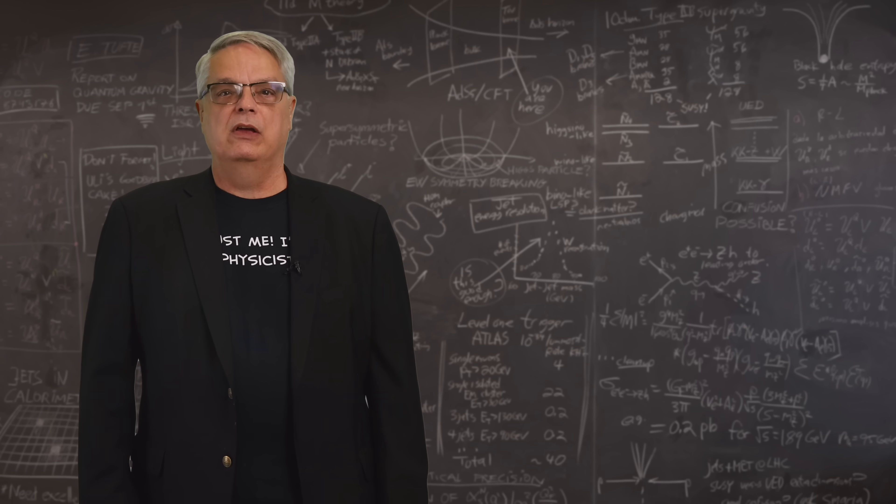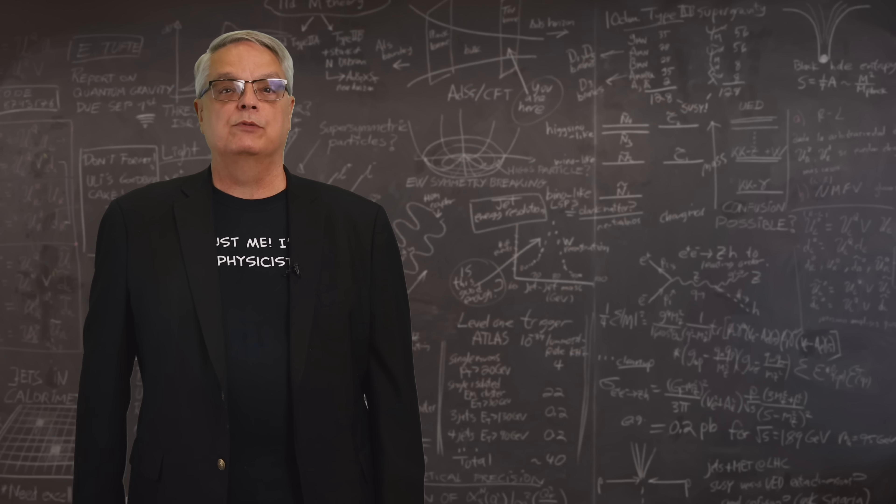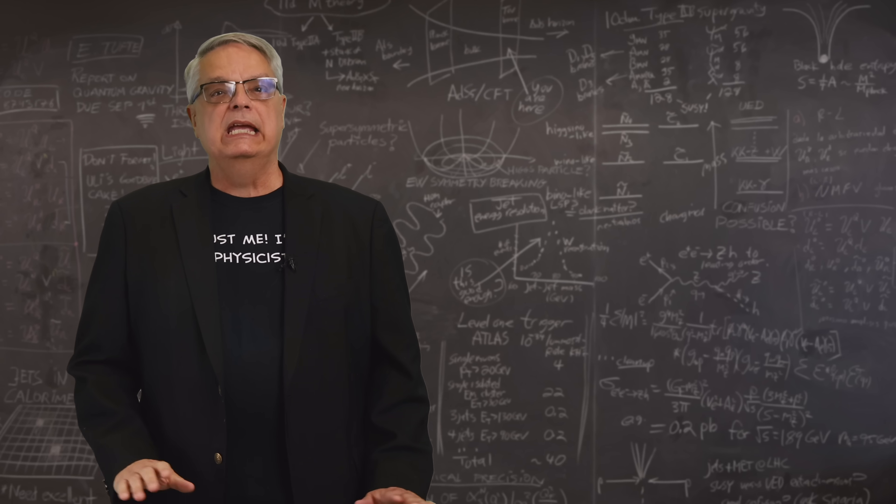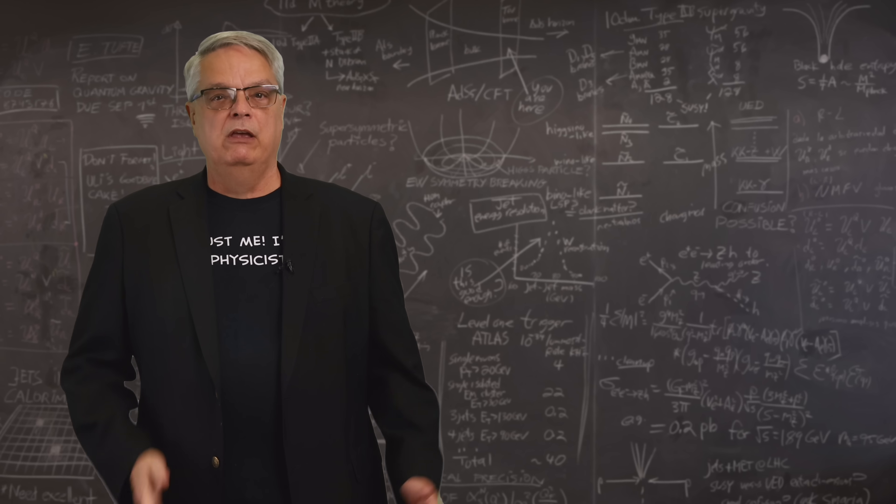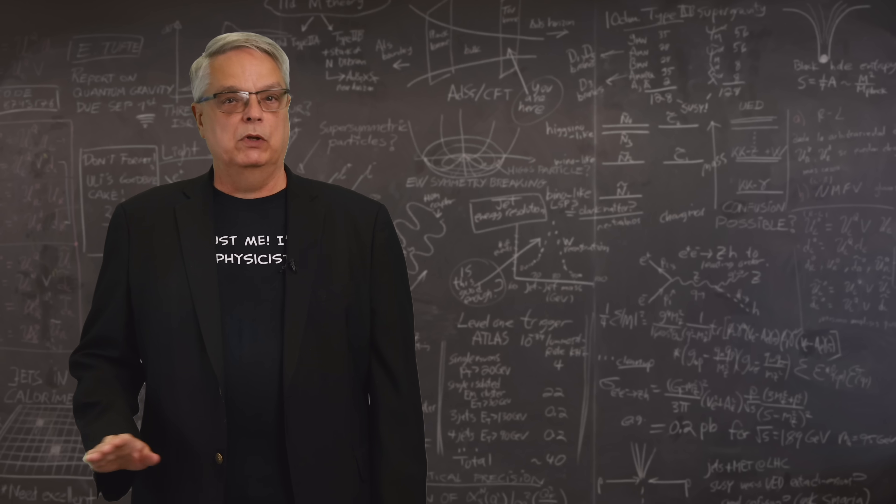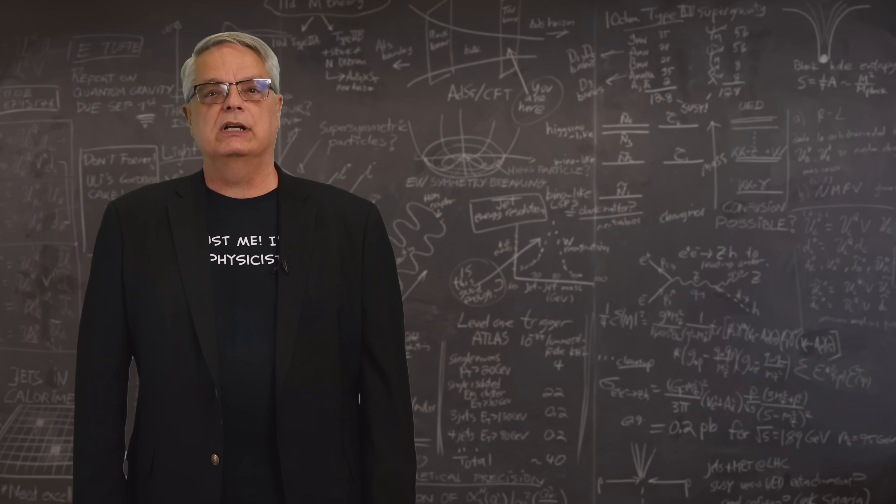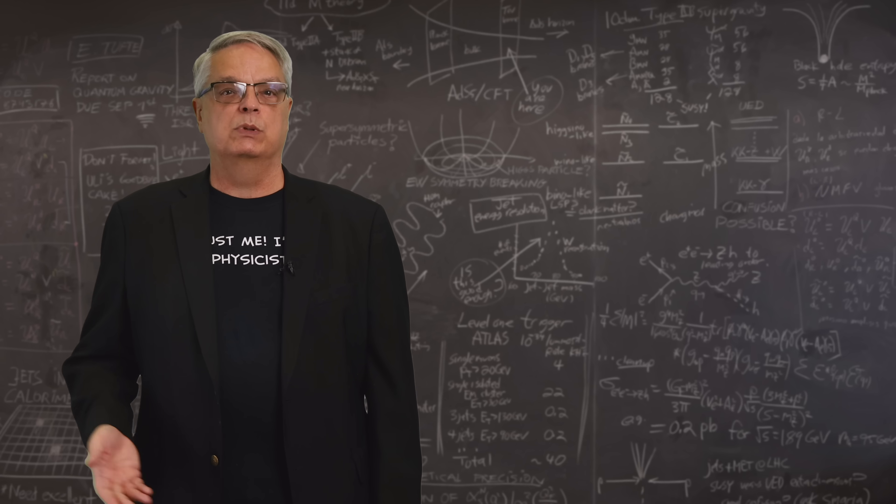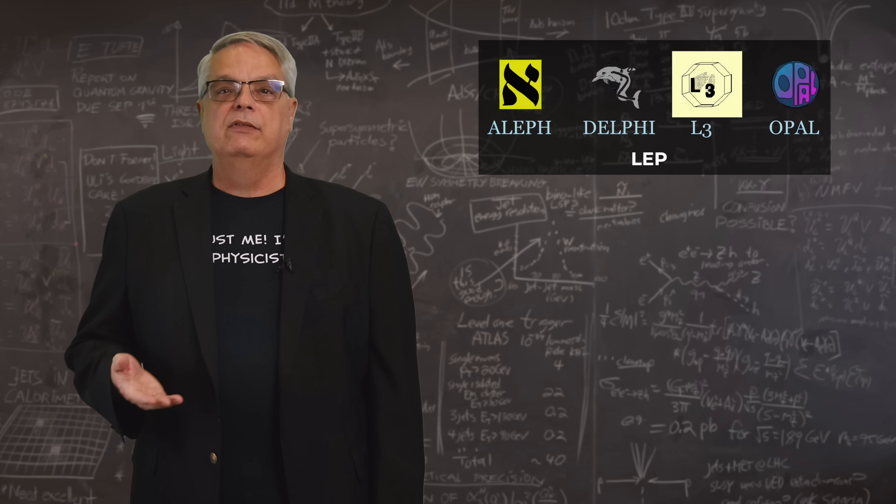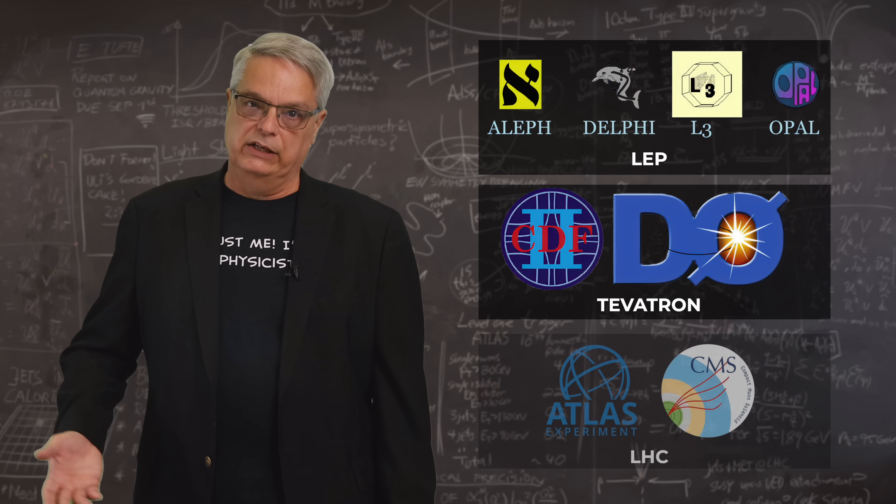Over the past couple decades, there have been three distinct approaches to search for the Higgs. Each of these approaches are related to the accelerator being used. For each accelerator, there were multiple experimental groups, but those groups use similar techniques. Thus, I will use the accelerators to define the three eras, specifically the LEP period, the Tevatron period, and the LHC period.